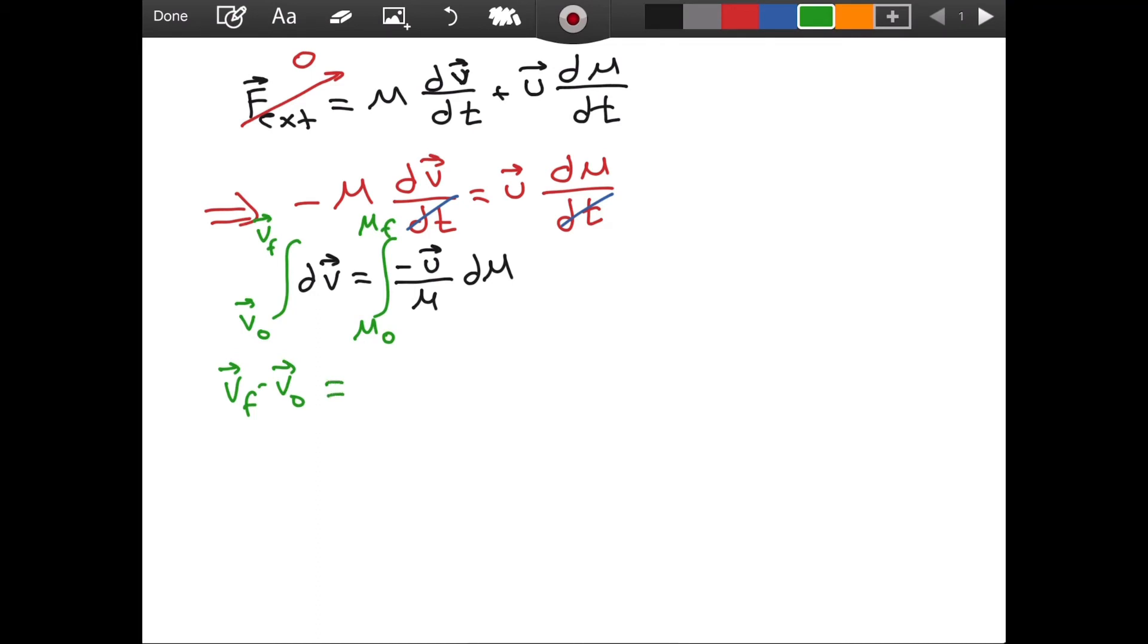On the right, we can take the negative u out of the integral sign because it is a constant. We are able to take constants outside of the integral, also outside of the derivative. It is like how we can do it in sigma notation. It is just an addition. And now we have from M0 to Mf dm over m.